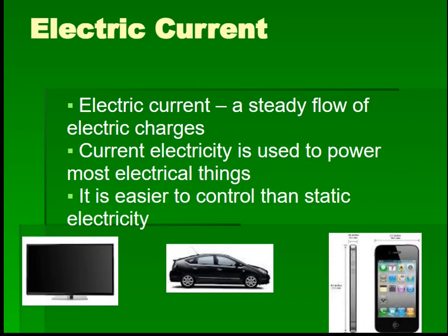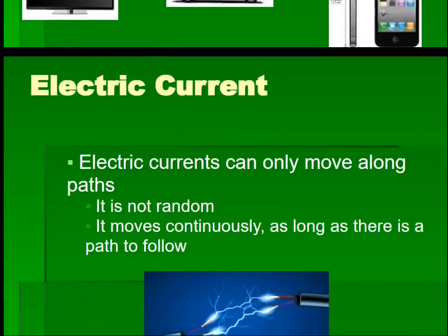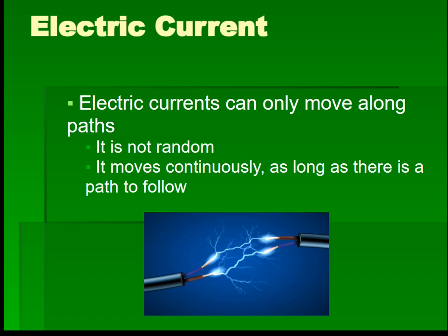Moving to the concept of electric current. Electric current is a steady flow of electric charges. Current electricity is used to power most electrical things. It is easier to control than static electricity. Electric currents can only move along a path — it is not random. It moves continuously as long as there is a path to follow.